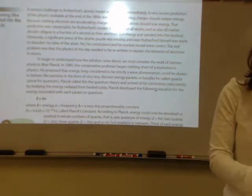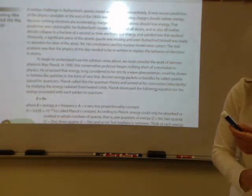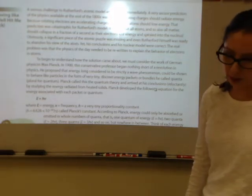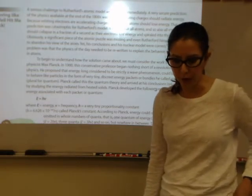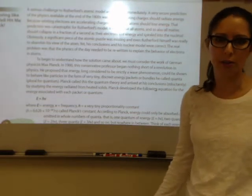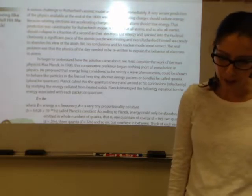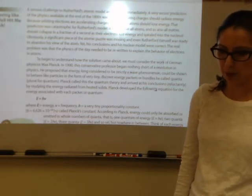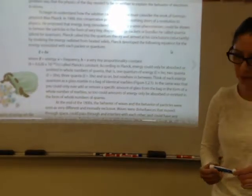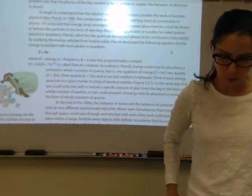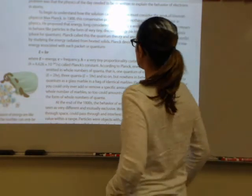In the 1800s, the physics available at the time said that accelerating charges should give off energy, and electrons are accelerating charges. So electrons in atoms should technically lose energy and matter should collapse. Physics needed to be rewritten to explain the behavior of electrons, and Max Planck in 1900 proposed that energy could be shown to behave like particles.